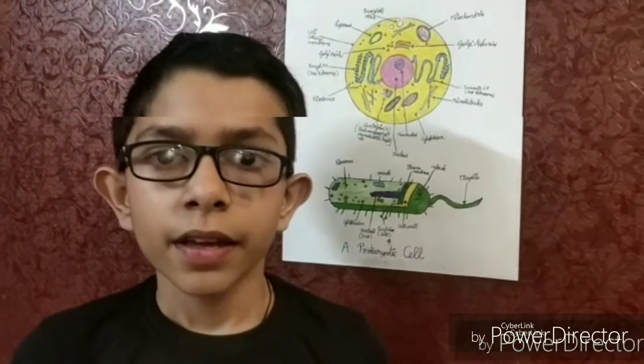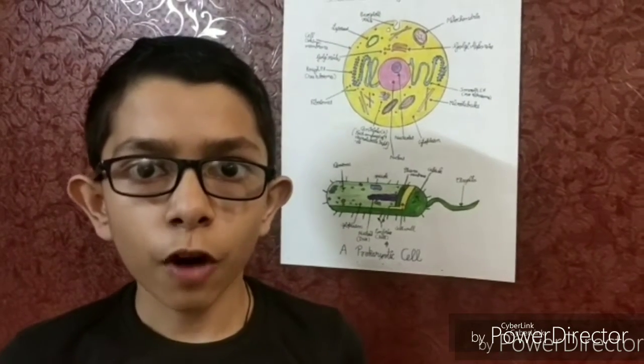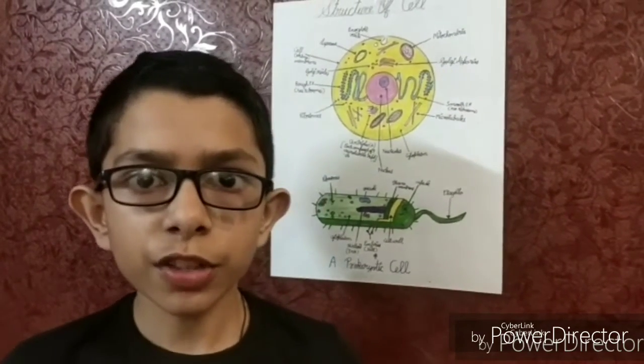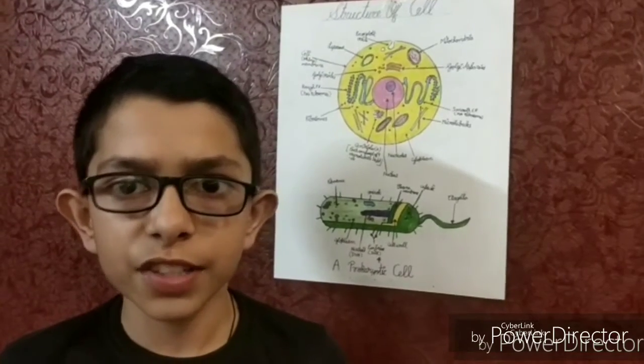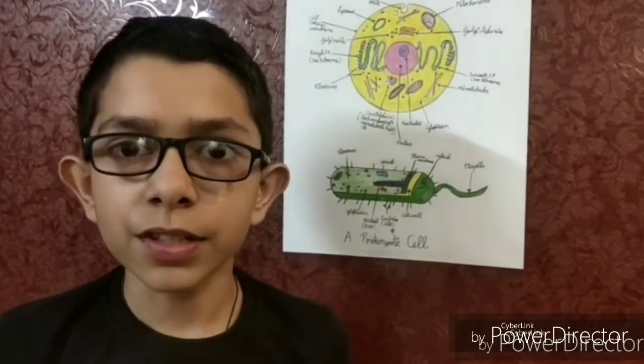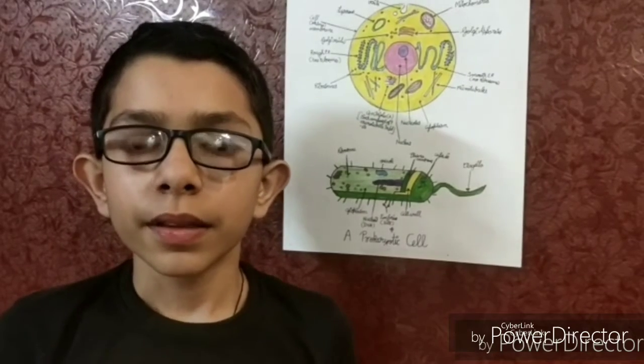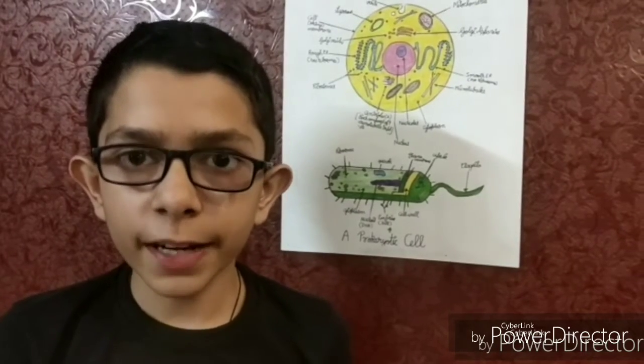Now comes the mitochondria. It is also known as the powerhouse of the cell. It produces energy in the form of adenosine triphosphate or ATP. ATP is also referred to as the energy currency of the cell. The mitochondria possesses two membranes or double membranes. The compartment enclosed by the inner membrane is known as matrix and it also possesses its own DNA and ribosomes.